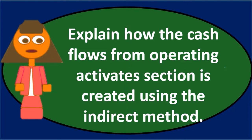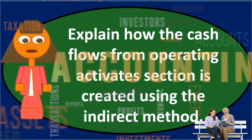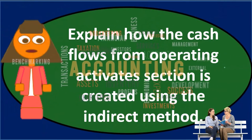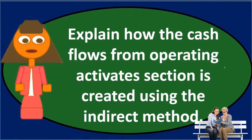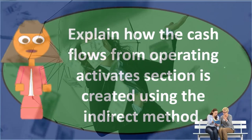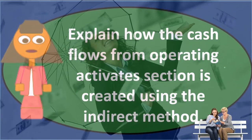Anything that deals with the income statement can be examined using that same logic — reverse out any accrual-type activity to get to net income on a cash basis. Some things are directly on the income statement, like depreciation expense. Depreciation is recorded as debit depreciation expense and credit accumulated depreciation — no cash is involved. Therefore we reverse it out of net income.